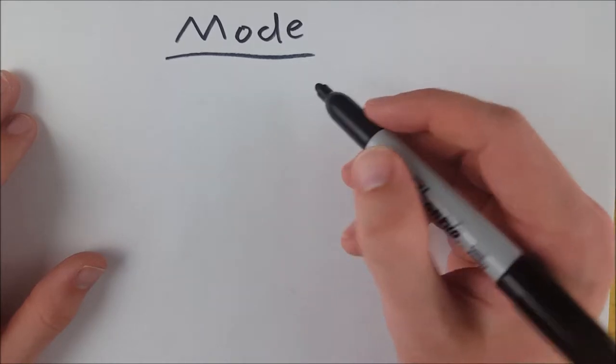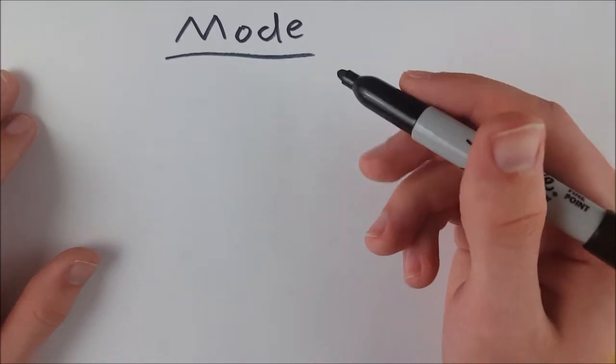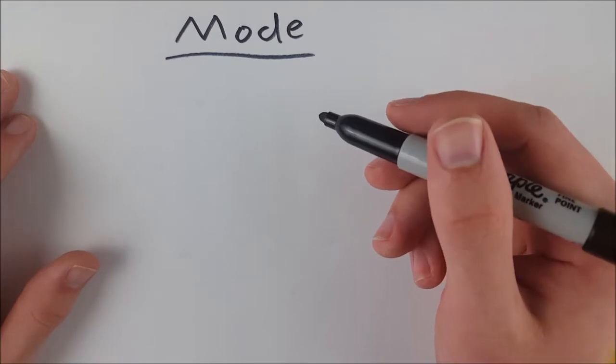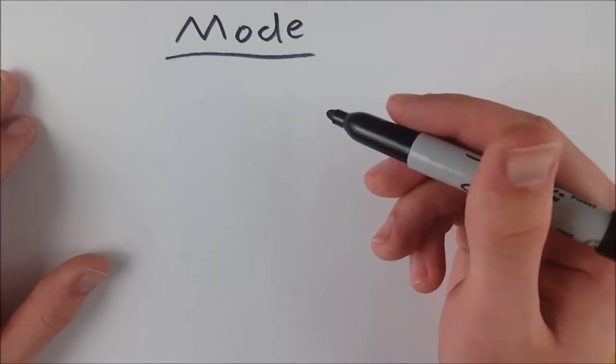So the mode of a set of data, very simply, is just the most common data point in the set of data, which is to say it's the one that occurs the most often.